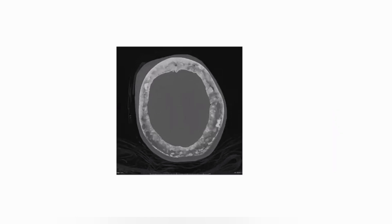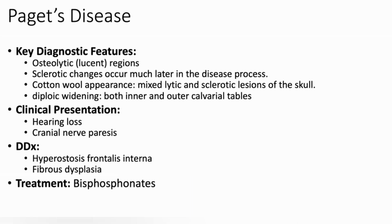On the provided CT scan, there is marked expansion of the diploic spaces with mixed lytic and sclerotic lesions giving a cotton wool appearance. The contour of the outer and inner table is normal. No evidence of bony destruction, erosion, or periosteal reaction. On the basis of these imaging findings, my provisional diagnosis is Paget's disease. I would like to obtain serum alkaline phosphatase levels, urinary hydroxyproline levels, and a skeletal survey. I would also correlate with clinical details to rule out hearing deficits, cranial neuropathies, and pathological fractures. No malignant transformation is appreciated in the given images.